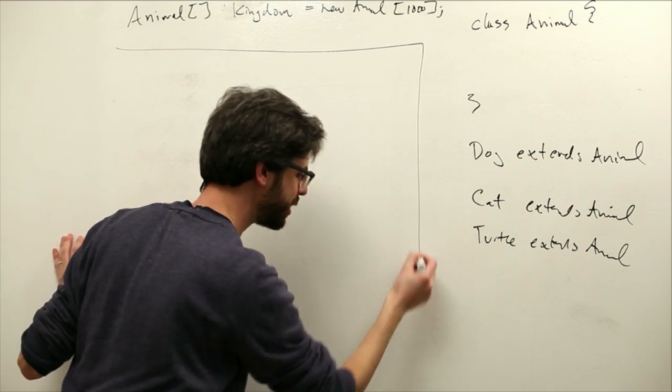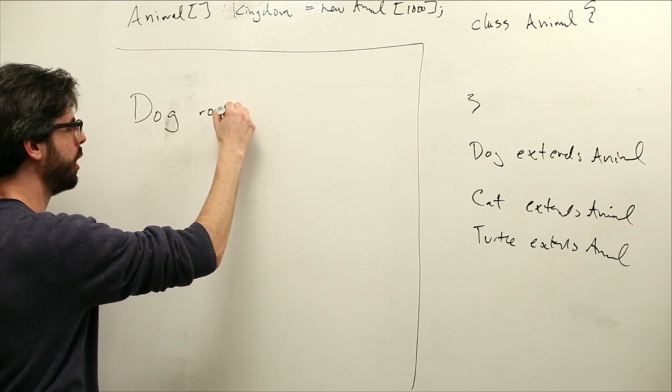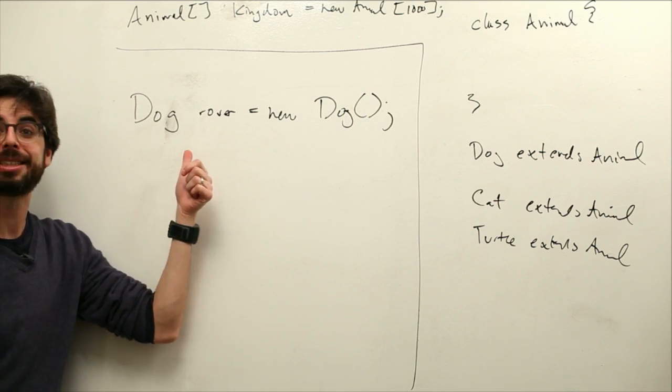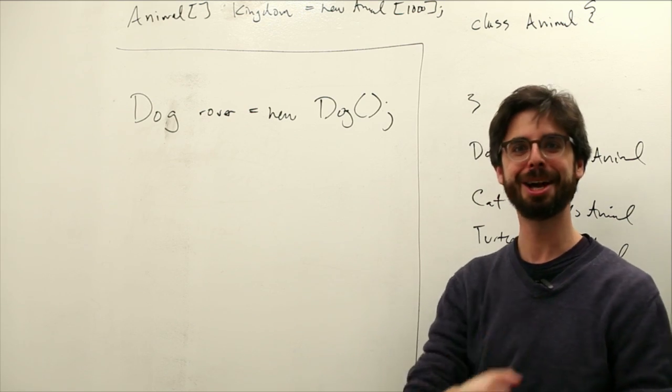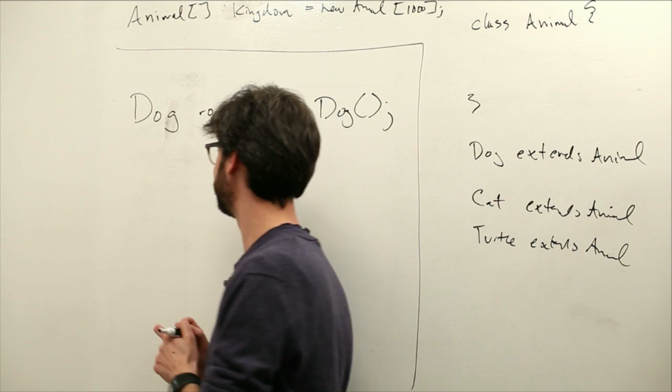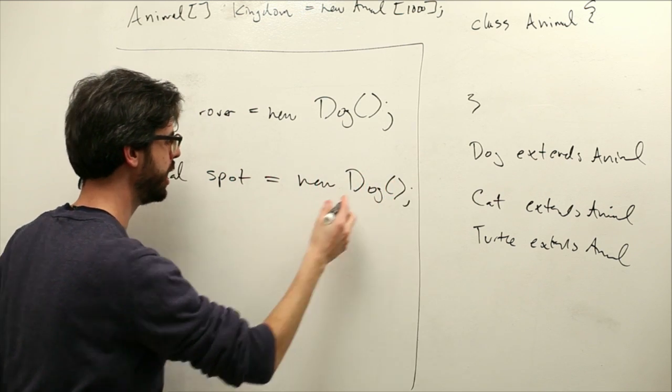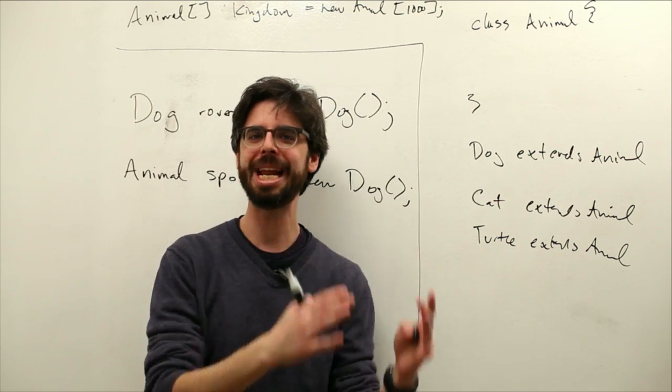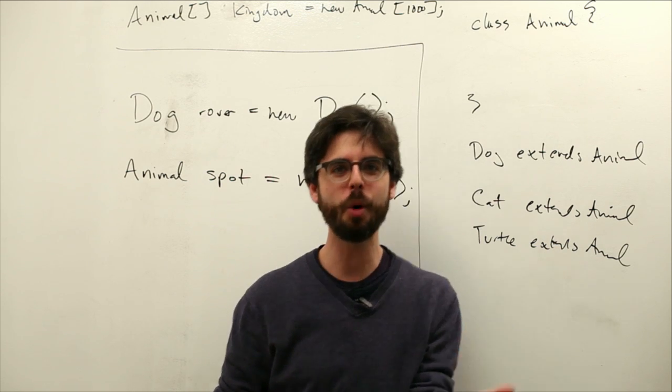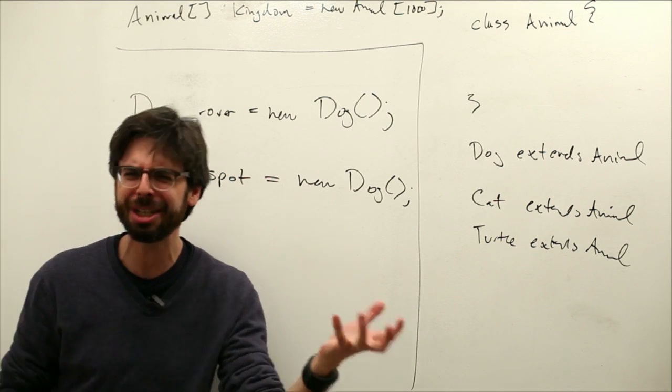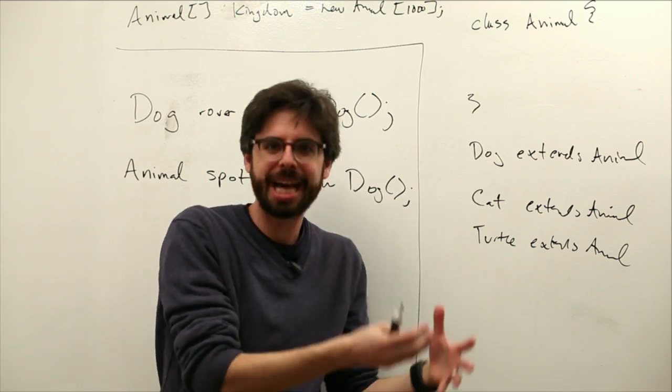Let's look at two lines of code. I'm going to say dog rover equals new dog. This is something we should be very comfortable with. We have an object of type dog, its name is rover, it's a new dog object. Here is polymorphism, something new that we're allowed to do. Animal spot equals new dog. This is polymorphism. What polymorphism, which means from the Greek many forms, allows us to do is say I have a dog object. If it's convenient to think of it as a dog object, I'm happy to do so. If it's more convenient to think of it as an animal object, that's also allowed. It really truly is a dog, but we can talk about it as if it's an animal because a dog is an animal.